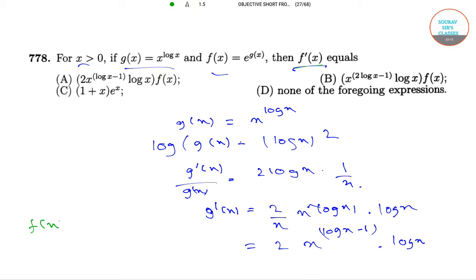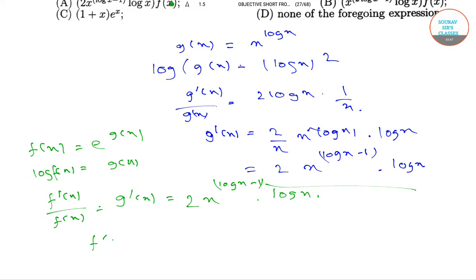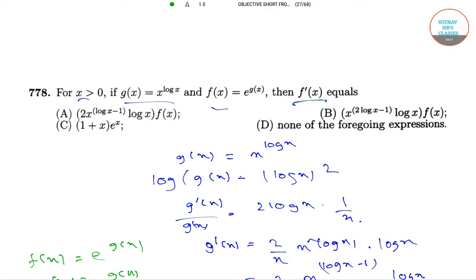Now for f(x) equals e raised to the power g(x), taking log: log f(x) equals g(x). Differentiating with respect to x, f'(x) divided by f(x) equals g'(x), which equals 2·x^(log x − 1)·log x. From this we get f'(x) equals 2·x^(log x − 1)·log x·f(x), which is our option number A. So the correct answer is option number A.